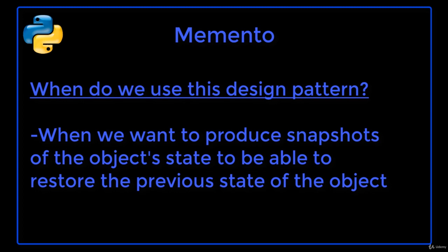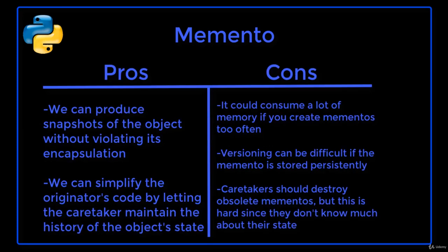We can use this pattern when we want to produce snapshots of the object state to be able to restore the previous state of the object. The Memento pattern relies on three key objects. The originator is the class that creates the memento object and also restores the originator to a previously stored state. The memento object is a class that holds the info about the saved state of the originator. Basically, the originator is the original object and the memento is the copy object. The caretaker stores the memento for later use — it only stores the object, it does not modify or examine it.